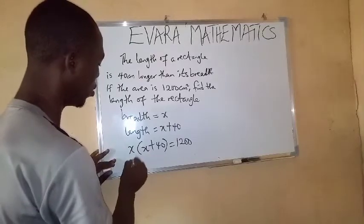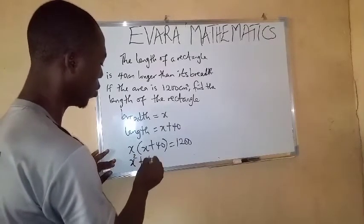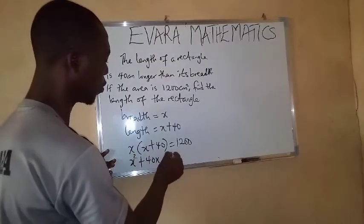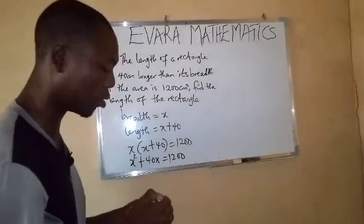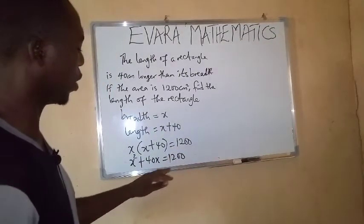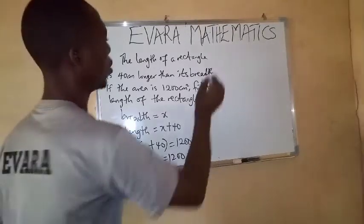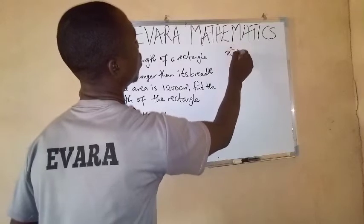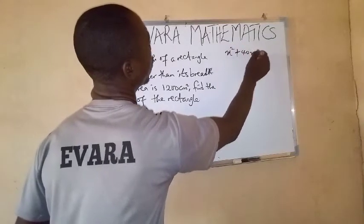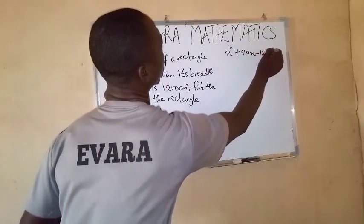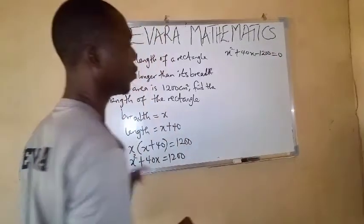So open this bracket. You have x squared plus 40x equals 1,200. You can see that we can arrange this to form a quadratic equation. So this is x squared plus 40x minus 1,200 equals to 0.